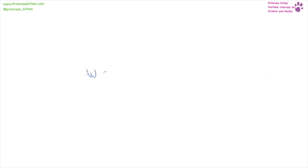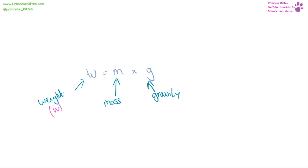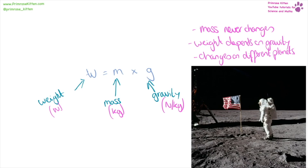Your weight is not the same as your mass because your weight is equal to your mass times gravity. Your weight is measured in newtons, your mass is measured in kilograms, and gravity is measured in newtons per kilogram. So your mass will never change, but your weight will change depending on the planet or depending on gravity, which is why when they went to the moon they were basically weightless so they could jump around.